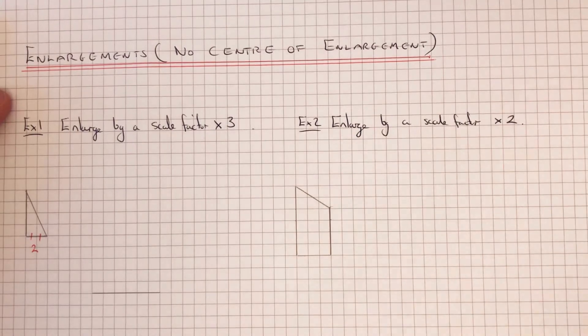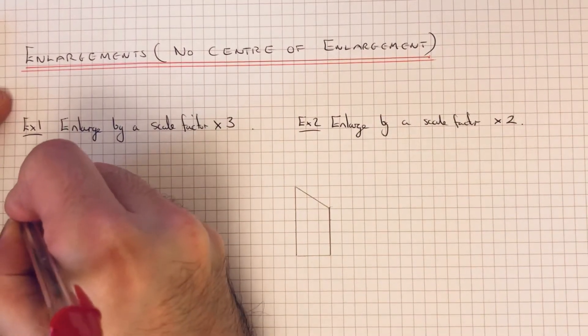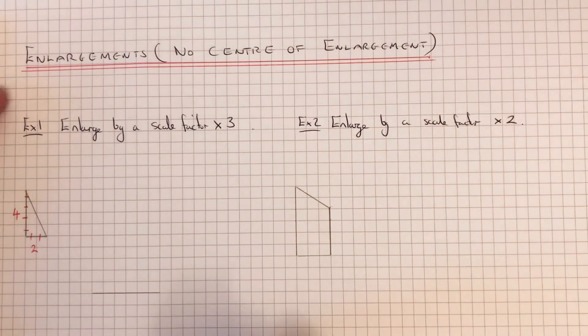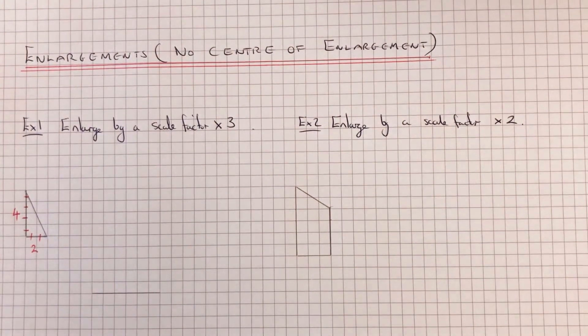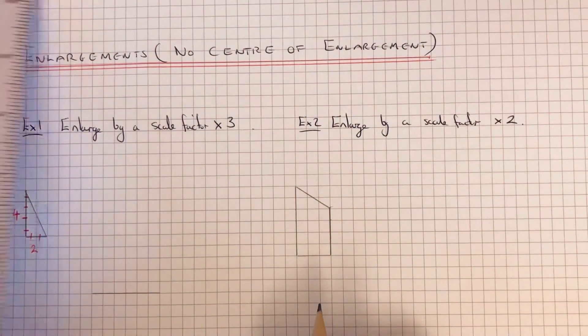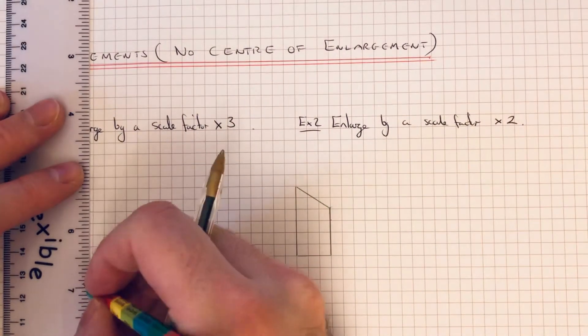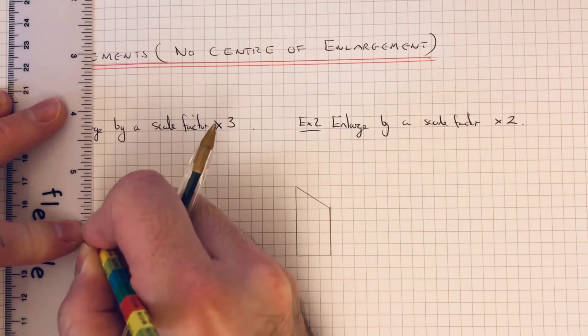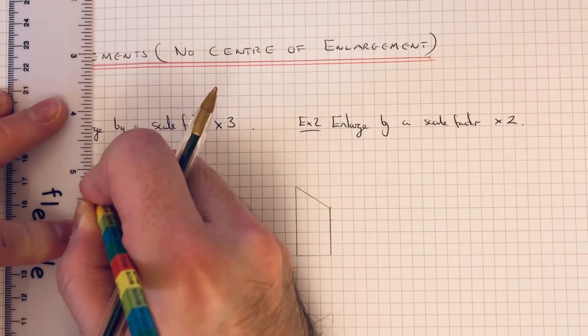So let's do the height next. Going up it is 1, 2, 3, 4 squares up. So if we times that by 3, that is 12. So if we go 12 squares up: 2, 4, 6, 8, 10, 12.